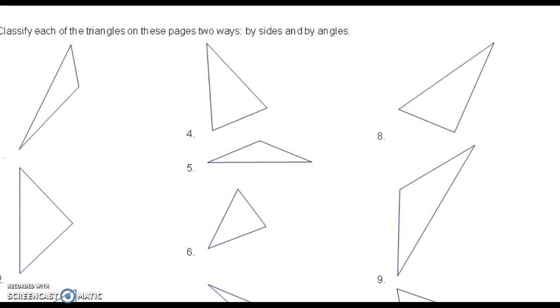All right, classify each triangle by its sides and by its angles. There are no side lengths that are the same, so it's scalene, and this angle is bigger than 90 degrees, so it is obtuse. Remember that when you're classifying by side, scalene means that no sides are equal, isosceles means that two sides are equal, equilateral means that all three sides are equal.